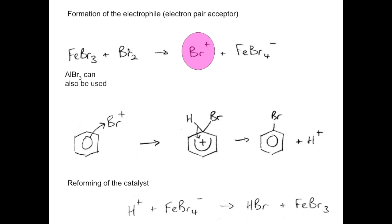If it was AlBr3, we would still have Br+ there, but we'd have AlBr4- instead. This part of the mechanism would be exactly the same, and the only difference would be in the reforming of the catalyst: H+ plus AlBr4- gives HBr and AlBr3.